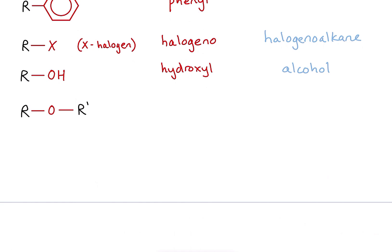Next, we've got oxygen again, but this time my oxygen is between two parts of the molecule — probably carbons and some other stuff — so it's in the middle of a carbon chain. This functional group is known as the alkoxy functional group, sometimes called the ether functional group, because it belongs to the class of the ethers.